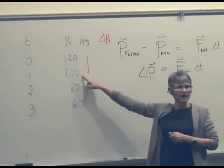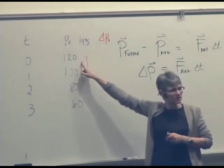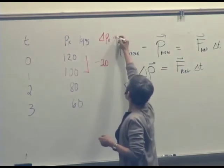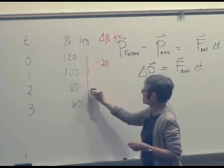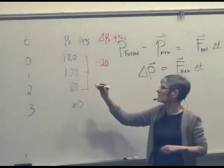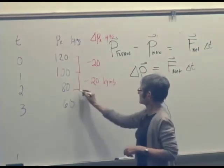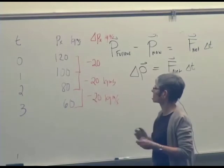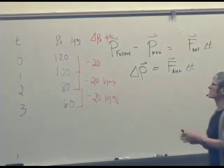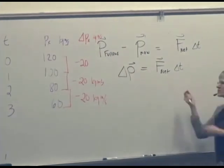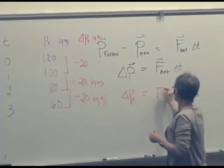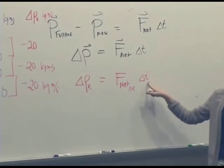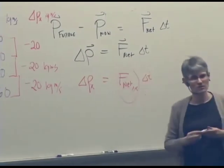So P final, P_x final minus P_x initial is going to be negative 20 kilogram meters per second. Okay, during this time interval, final minus P_x final minus P_x, negative 20 kilogram meters per second. During this time interval, ΔP_x, negative 20 kilogram meters per second. So it looks like during each of these Δt's, ΔP_x was the same. So we can write that piece of the equation. So we have F_net_x*Δt. If that was the same, Δt was the same, it was always one second. That suggests that the net force was in fact constant during this time.